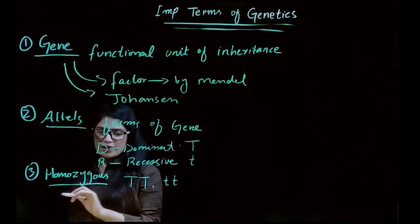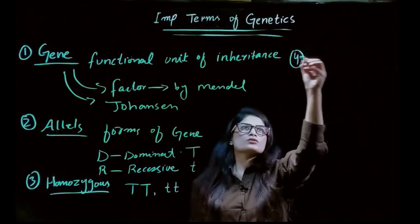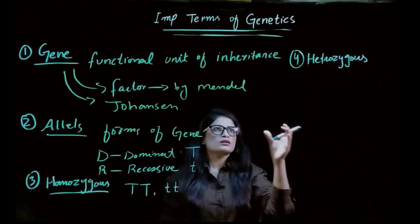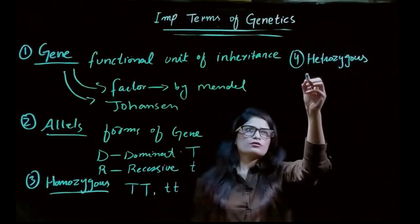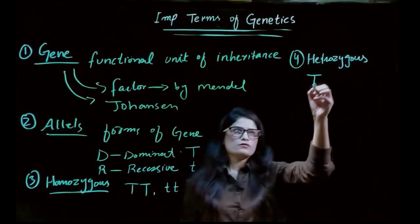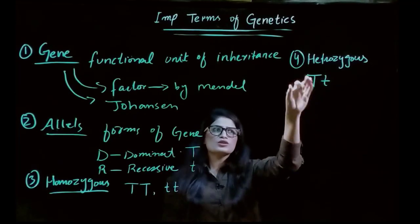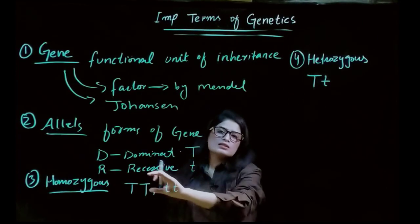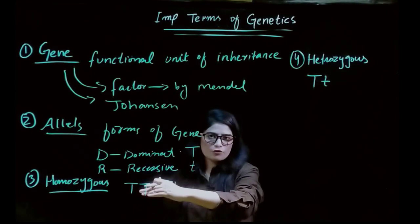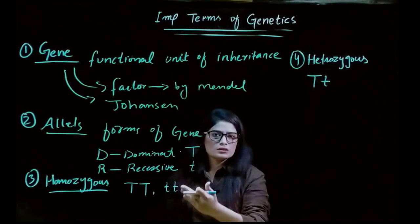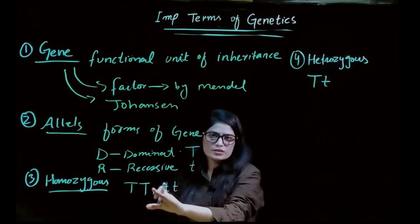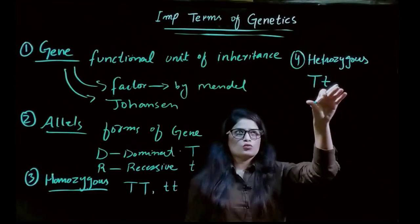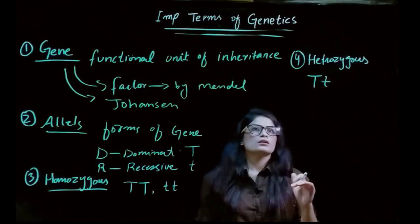The fourth term is heterozygous. Heterozygous means one gene is dominant — written as capital D — and the other is recessive — written as small d. In homozygous, both genes are the same (e.g., capital D capital D for dominant, or small t small t for recessive), whereas in heterozygous one is dominant and the other is recessive.